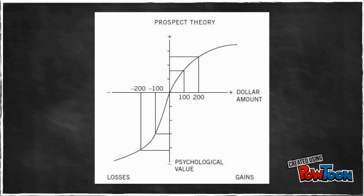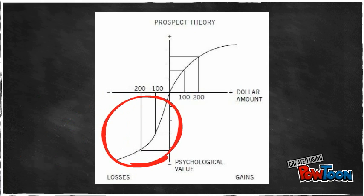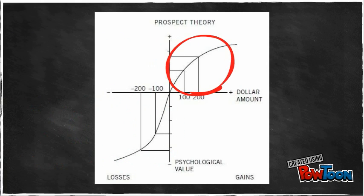Here we see a graphical representation of Prospect Theory. The curve in the upper right represents gains, while the curve in the lower left represents losses. Looking at the curves on either side of the graph, we can see that the decline on the left is steeper than the incline on the right. This indicates that losses are more salient than gains.